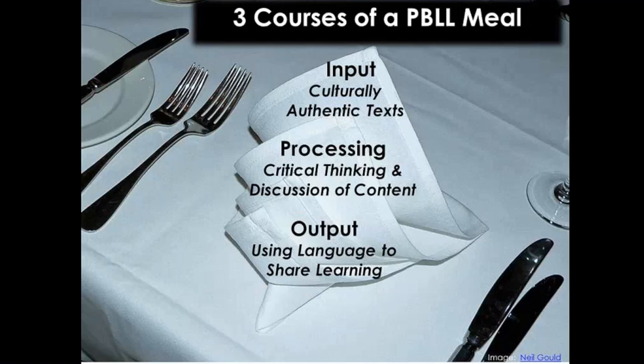There are three key components as we're planning a project — think of them as three courses in a meal. The first course is input: once we've determined our overarching topic and driving question, our next step is to think about what kinds of input students might need to begin work on that project. Ideally, that input will come from culturally authentic texts, which will help students develop background knowledge about the conceptual ideas related to the project so they can complete it successfully.